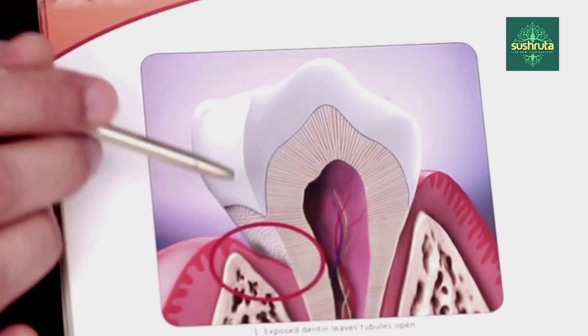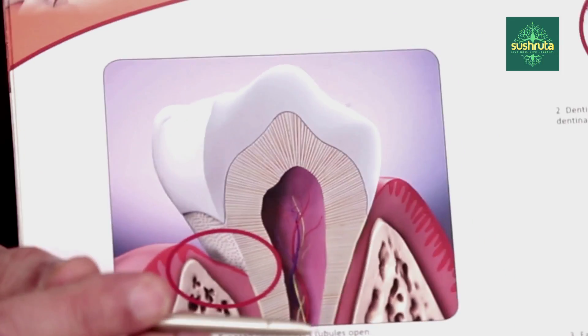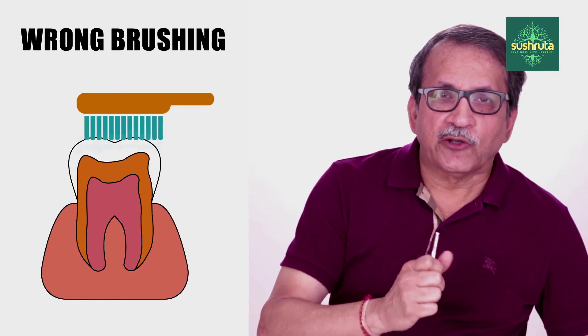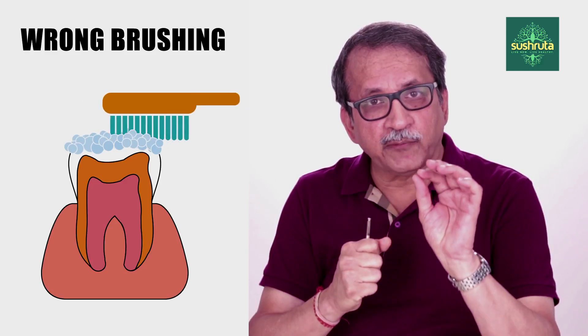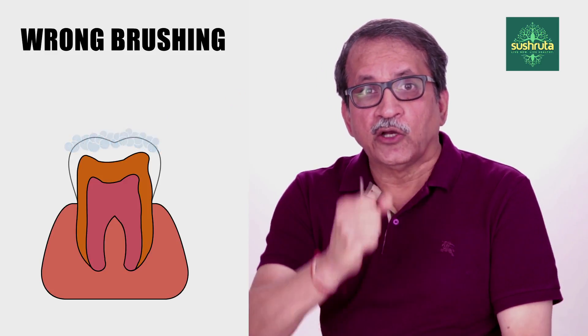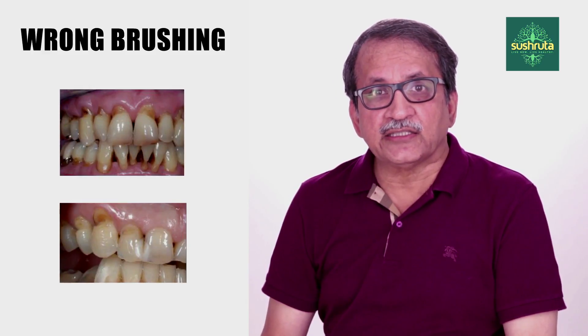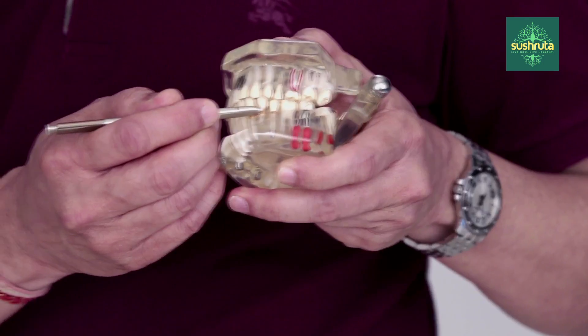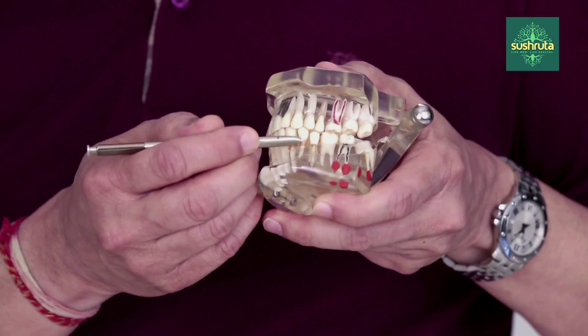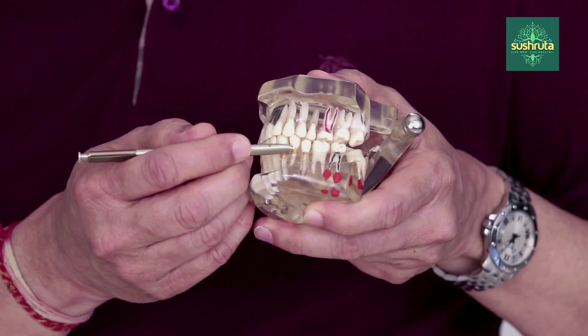Now, what are the causes of enamel going? Cause number one is wrong brushing. If you are brushing very hard with a hard brush, medium brush, or soft brush using wrong technique, that can cause loss of enamel at the junction of gums and the tooth. You can see here there is a cavity where the enamel is gone because of wrong brushing, and once the enamel goes the dentine — the second layer — is exposed and you get sensitivity.